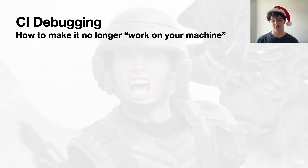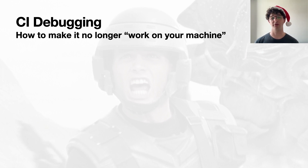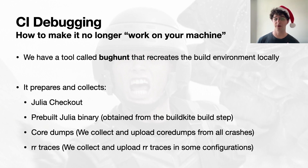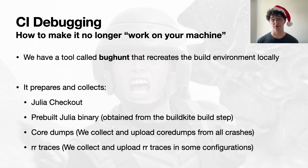Now this brings us to the live demo portion of the lightning talk, where we showcase how to use a tool we built called BugHunt in order to recreate the build environment locally so that you can see things like the Julia checkout, the binaries that were built, and any core dumps or RR traces that were generated as part of the build. So without further ado, let's go take a look.